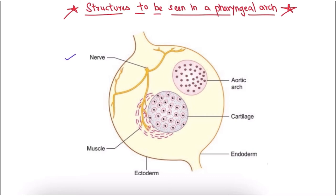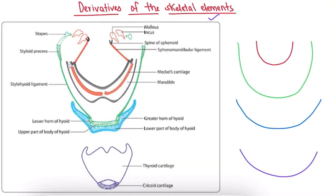The structures to be seen in pharyngeal arches include development of nerve, muscle, cartilage, and aortic arch. Now coming to the derivatives of the skeletal elements formed from pharyngeal arches. In this image we can clearly see the structures derived from the first pharyngeal arch (shown in red), like malleus, incus, sphenomandibular ligament, etc.